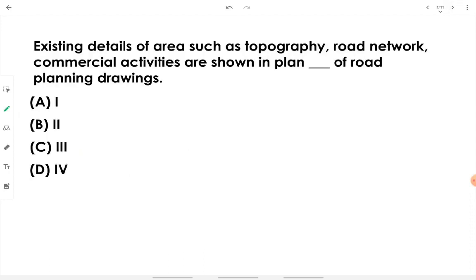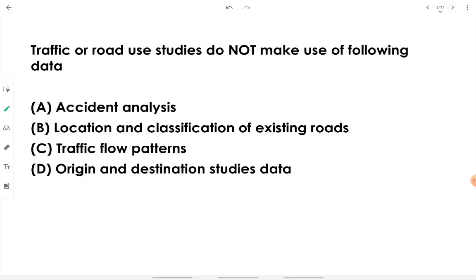Question six: existing details of an area such as topography, road network, and commercial activities are shown in Plan 1 of road planning drawings. Plan 1 shows all existing natural or man-made features — topography (forests, vegetation, rock type), existing road networks from previous construction, and commercial activities such as industries, shops, and manufacturing companies.